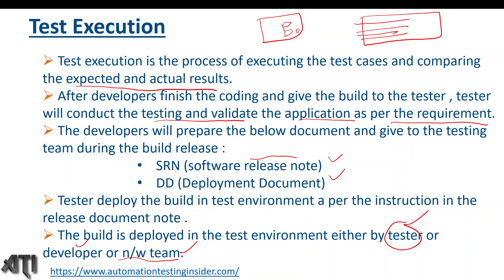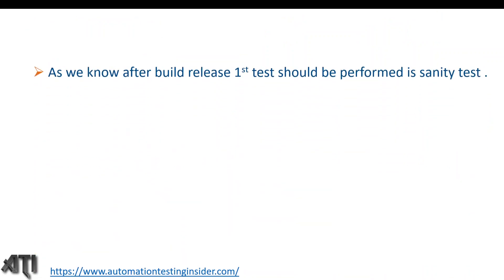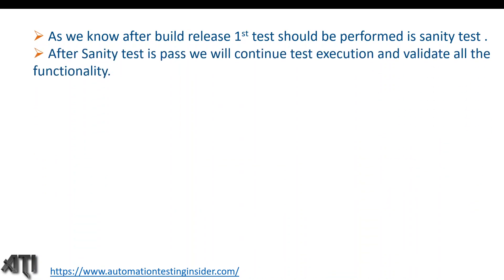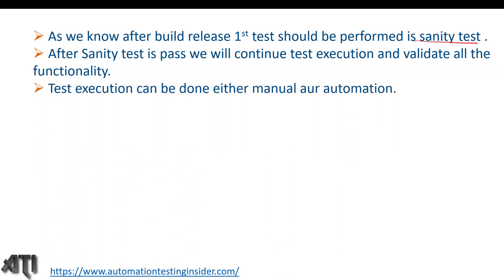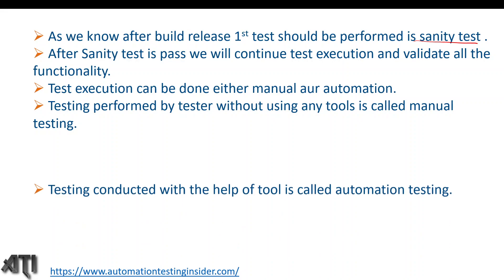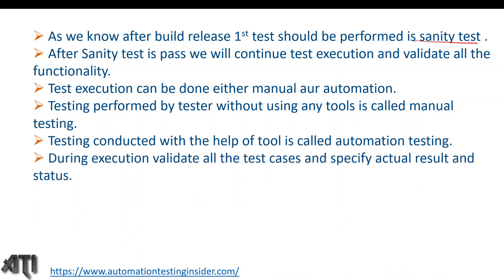I've already spoken about what a build and release is — I'll provide the link in the description box. After build release, the first test to be performed is sanity testing. After sanity testing is passed, we continue test execution and validate all other functionalities. Sanity testing checks whether the build is stable enough for further testing. Once sanity testing passes, test execution can be done either manually or via automation — testing performed without any tool is manual testing, and using an automation tool is automation testing.